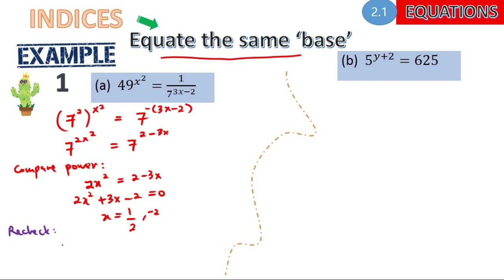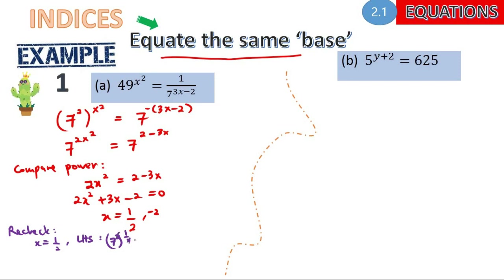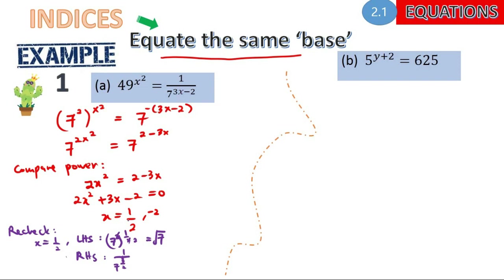Let's check what happens when x = 1/2. On the left-hand side, substituted into the original equation, we get 7 squared to the power of 1/4, which is 7 to the power of 1/2, or √7. On the right-hand side, we get 1 over 7^(3/2−2), which is 7 to the power of −1/2, making it √7 as well. So x = 1/2 is accepted.